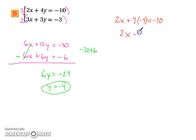we now have 2x plus 4 times negative 4 equals negative 10. So we have 2x minus 16 equals negative 10. And if we add 16 to both sides, we end up with 6, and divide by 2, x must equal 3. So in the end, you end up with 3, negative 4.